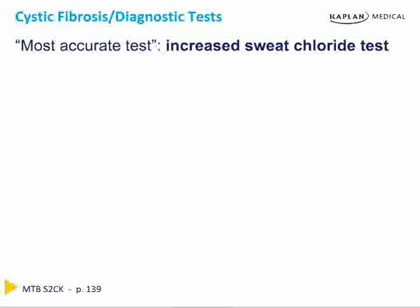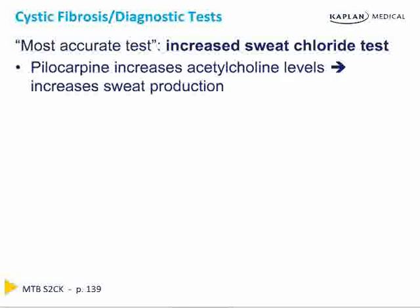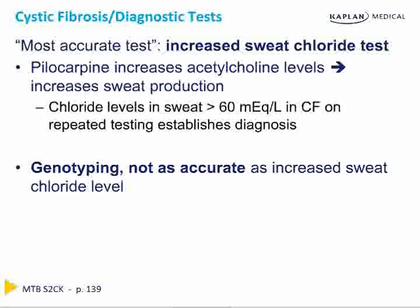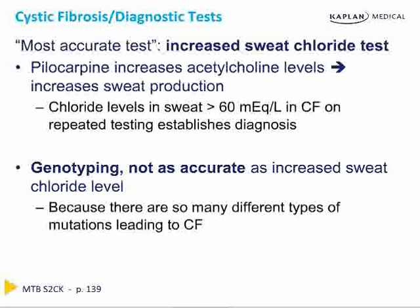If asked on Step 2 about the most accurate test to diagnose CF, the answer is an increase seen on the sweat chloride test. Patients are given pilocarpine, which increases acetylcholine levels, causing increased sweat production. The chloride level is then checked in the sweat, and if it is greater than 60 mEq per liter on repeated testing, you have established a diagnosis of cystic fibrosis. Genotyping is not as accurate as an increased sweat chloride level, simply because there are hundreds of mutations that can result in cystic fibrosis.